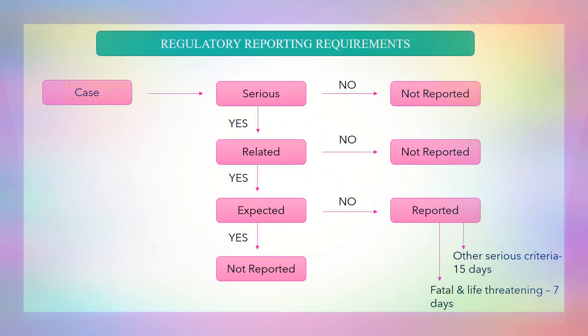Now let us see when a case should be reported. Look at this flowchart for better understanding. First, verify if the case is serious — if not serious, it is not required to be reported. If serious, check if the event is related to the drug — if not related, it is not required to be reported. If it is related to the drug, then check whether the event is expected or unexpected — if expected, it is not required to be reported; if unexpected, then it should be reported.